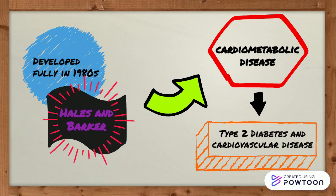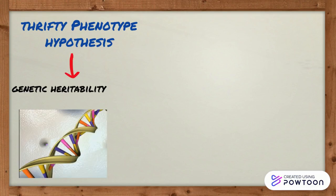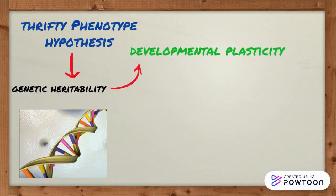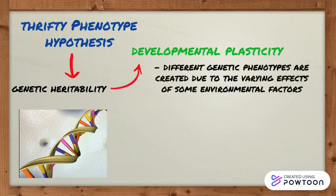They did in-depth research to further develop this hypothesis and explain some of the causes of these diseases in adults. This hypothesis takes into account genetic heritability while also bringing attention to developmental plasticity, which is where different genetic phenotypes are created due to the varying effects of some environmental factors.